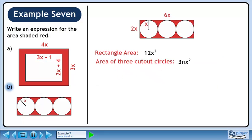Before proceeding, let's organize our work. The area of the full rectangle is 12x² and the area of the 3 cutout circles is 3πx².